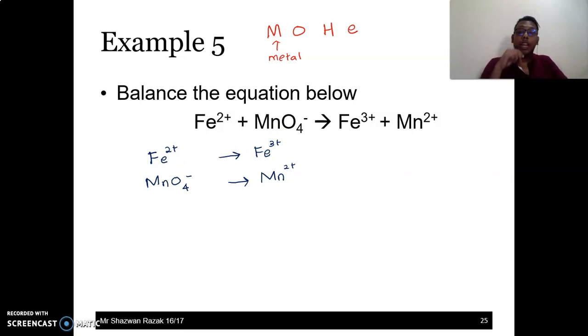Now we look at charge. When we look at charge, on the left hand side, the charge is positive 2. On the right hand side, the charge is positive 3. What we have to do now is add electrons. Electrons are species with negative charge.